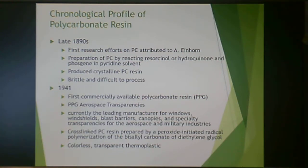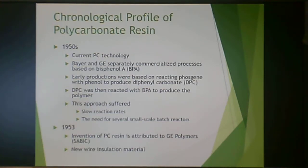Cross-linked polycarbonate resin can also be prepared by a peroxide-initiated radical polymerization of bisallyl carbonate and diethylene glycol, which produces a colorless, transparent thermoplastic. In the 1950s, the current polycarbonate technology was developed separately by Bayer and GE, based on bisphenol A.